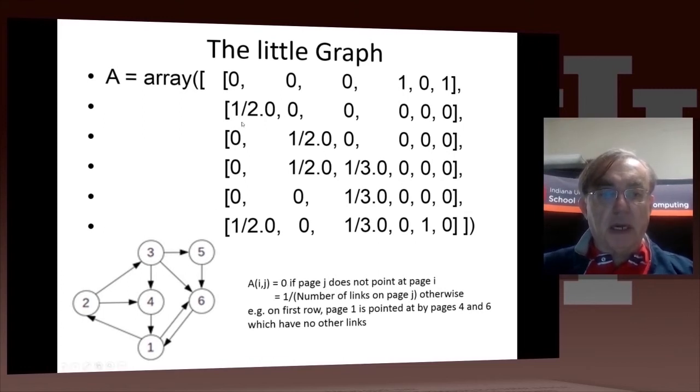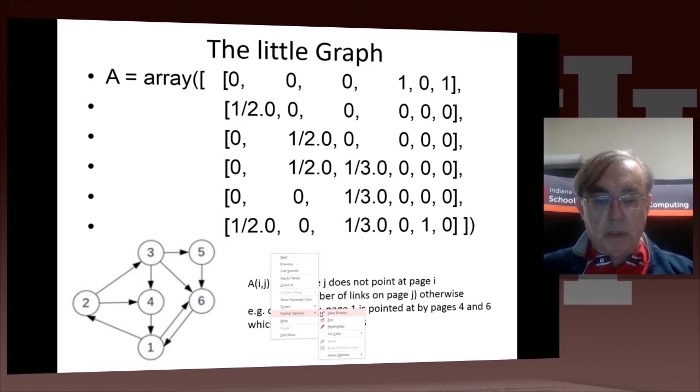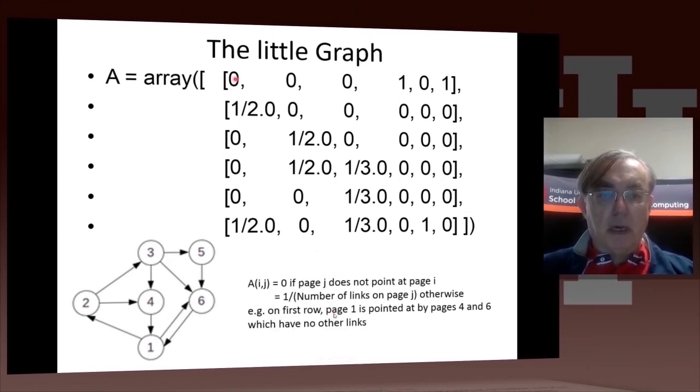And Aij, where i runs from 1 to 6. We probably need a pointer. So here's i of 1, here's i of 6, here's j of 4, and j of 6. So what does A14 equal to 1 mean? It means that 4 only points to one other site, and that site is number 1. So that's that 1 there.